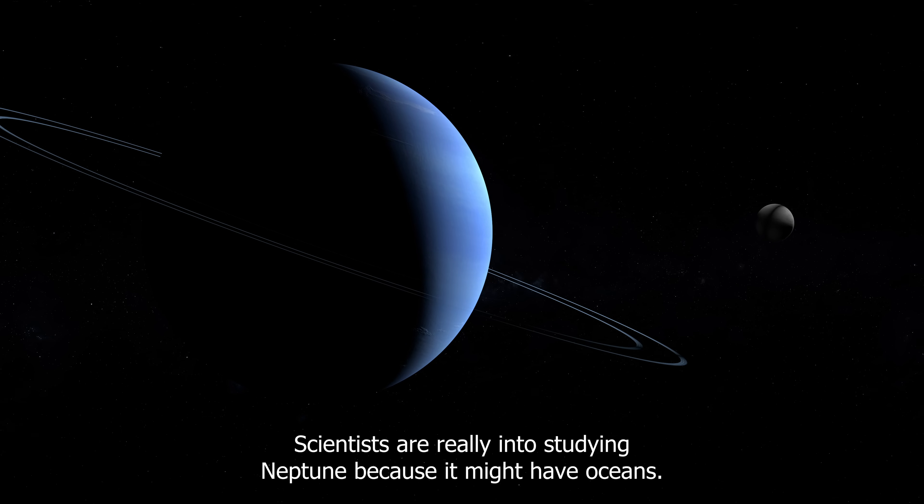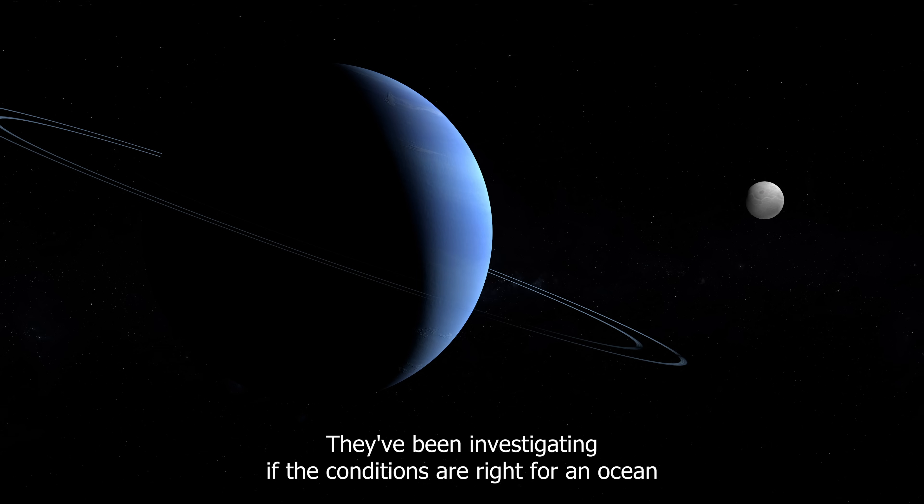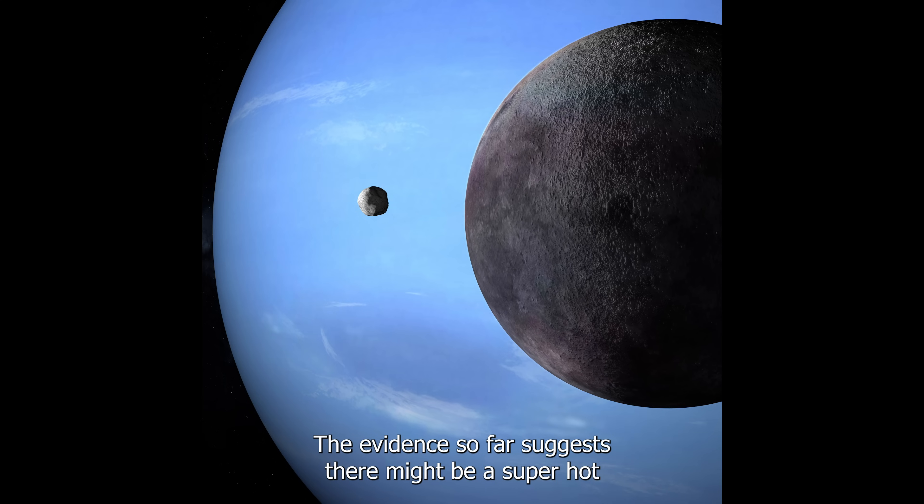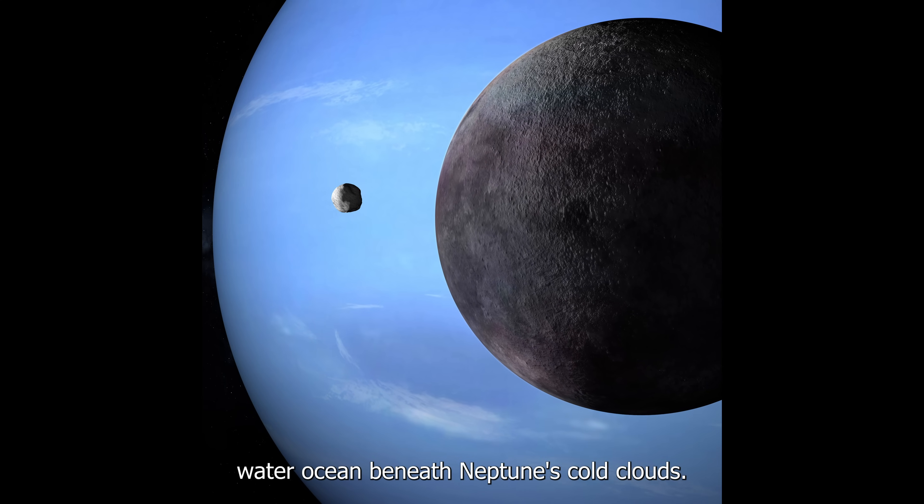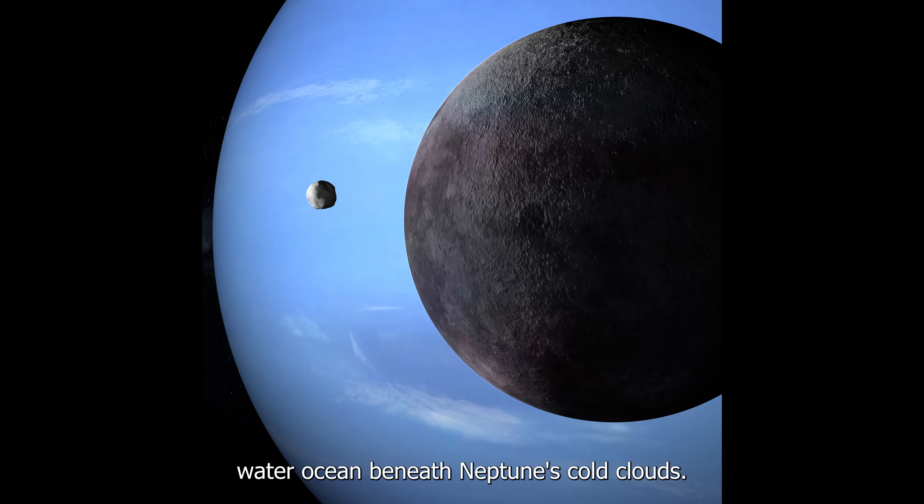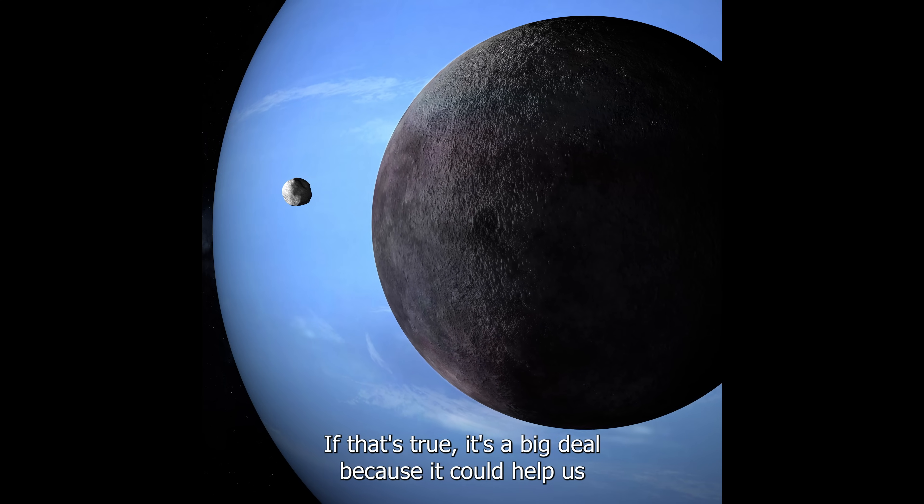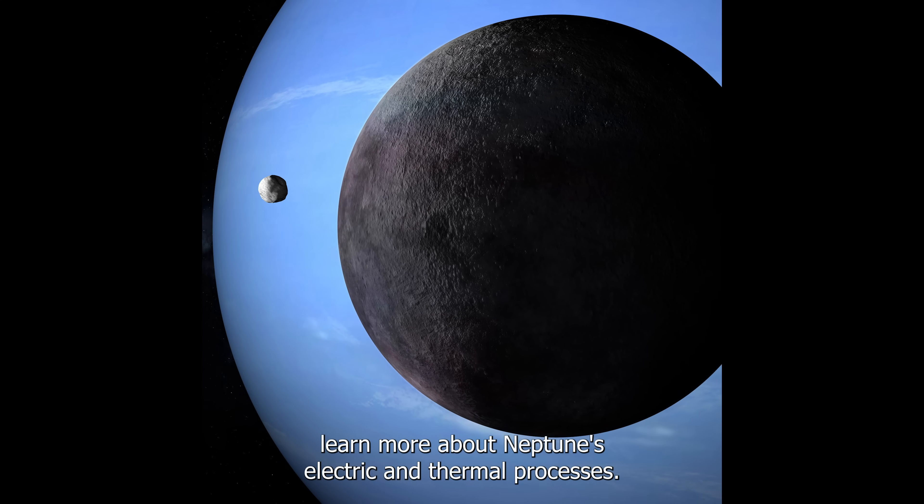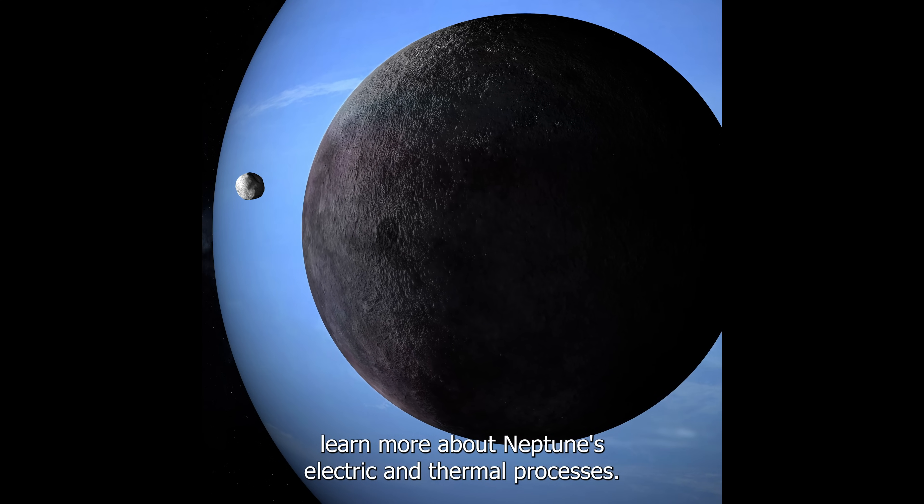Scientists are really into studying Neptune because it might have oceans. Some call it a potential ocean world. They've been investigating if the conditions are right for an ocean to exist on Neptune, and if it could last. The evidence so far suggests there might be a super hot water ocean beneath Neptune's cold clouds. If that's true, it's a big deal because it could help us learn more about Neptune's electric and thermal processes.